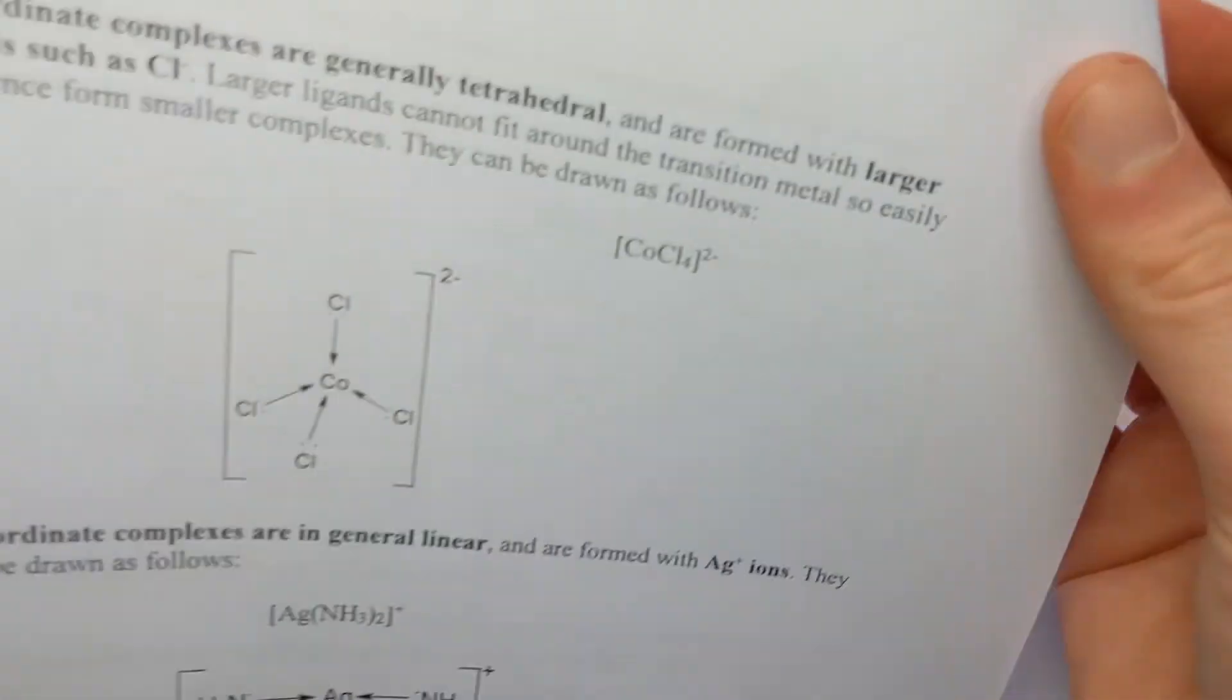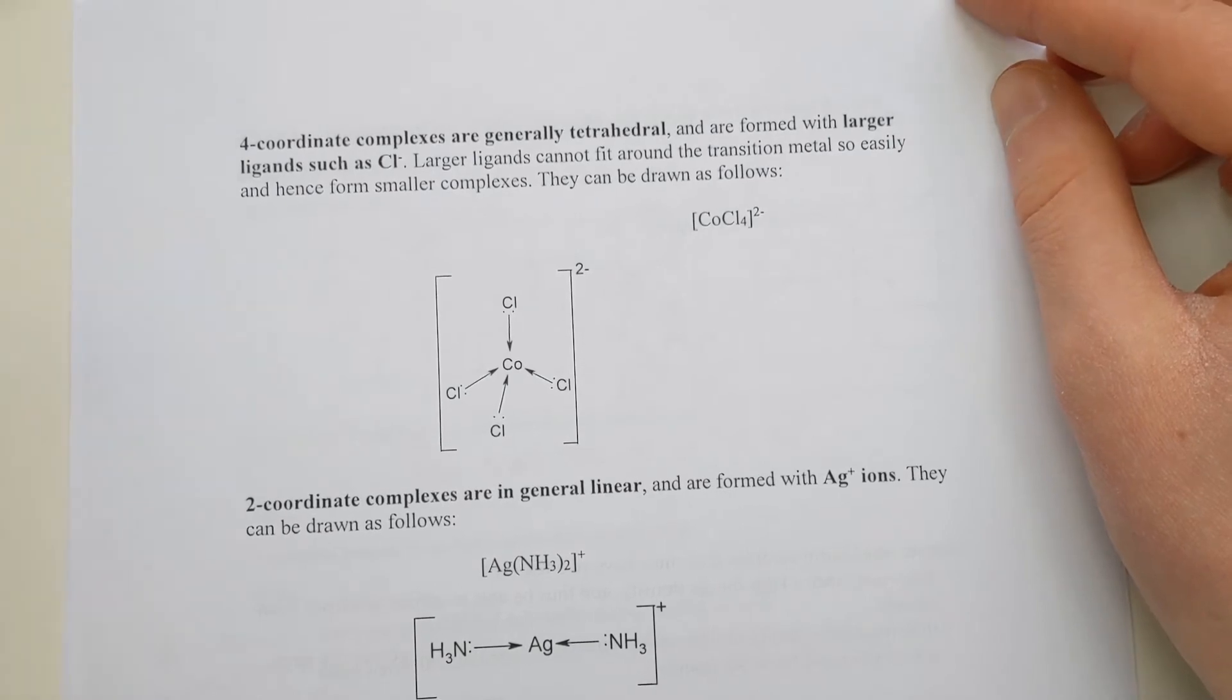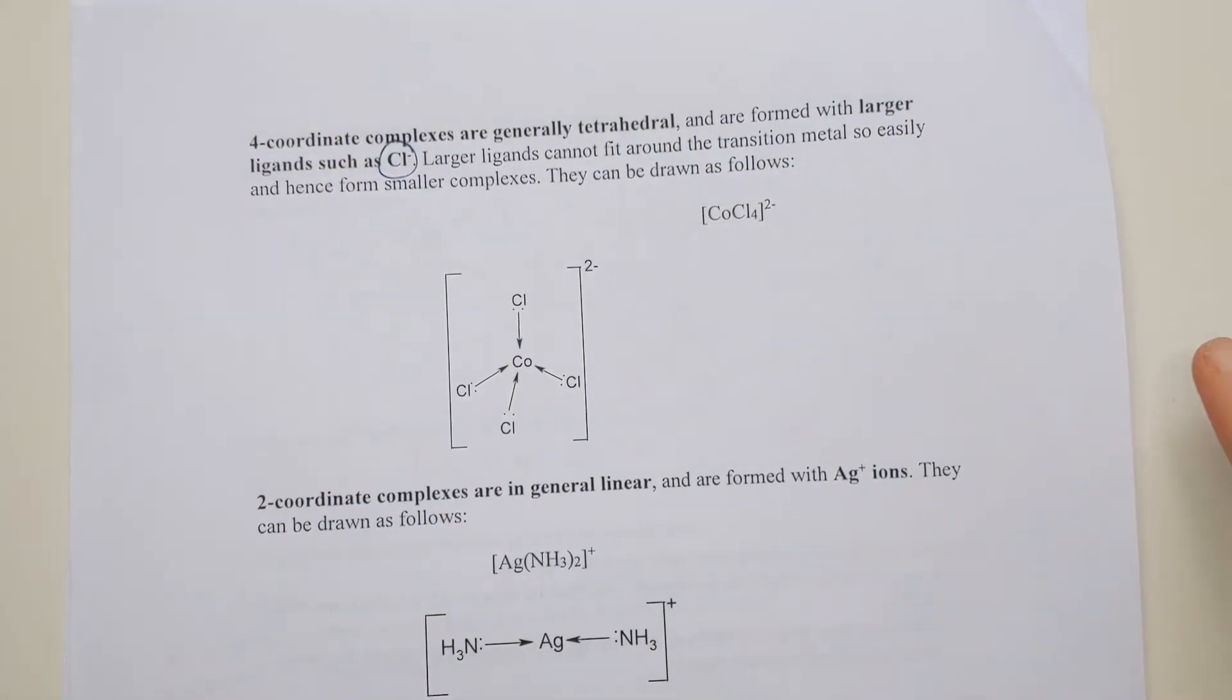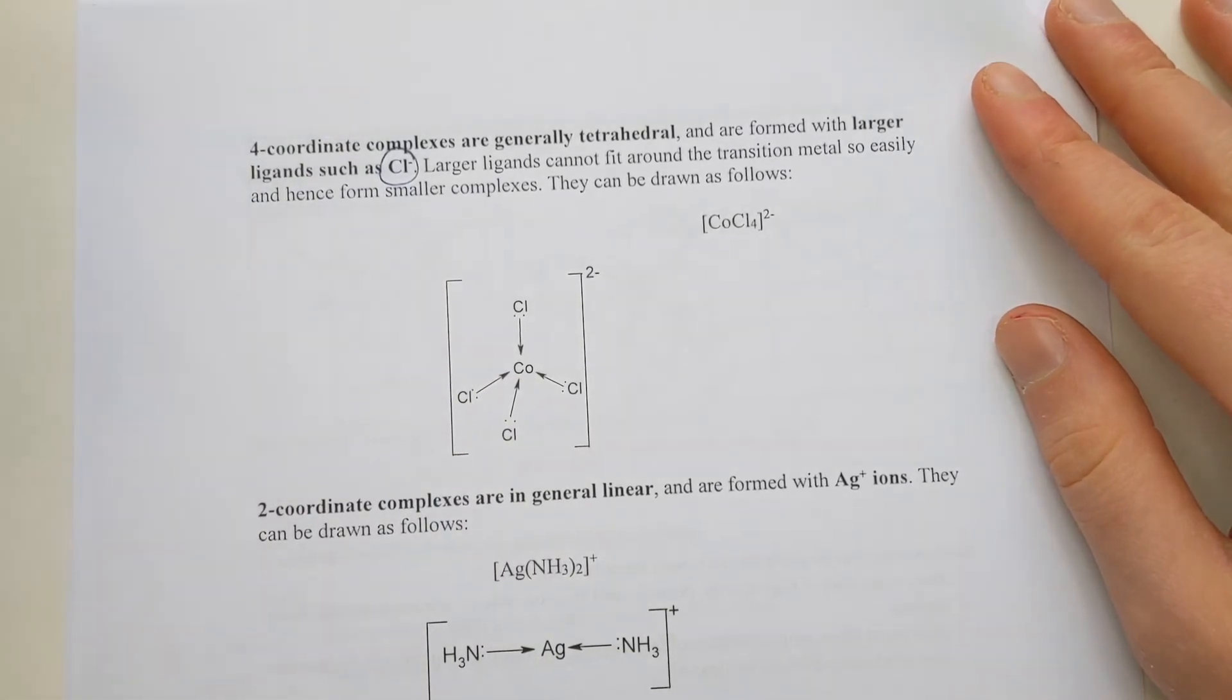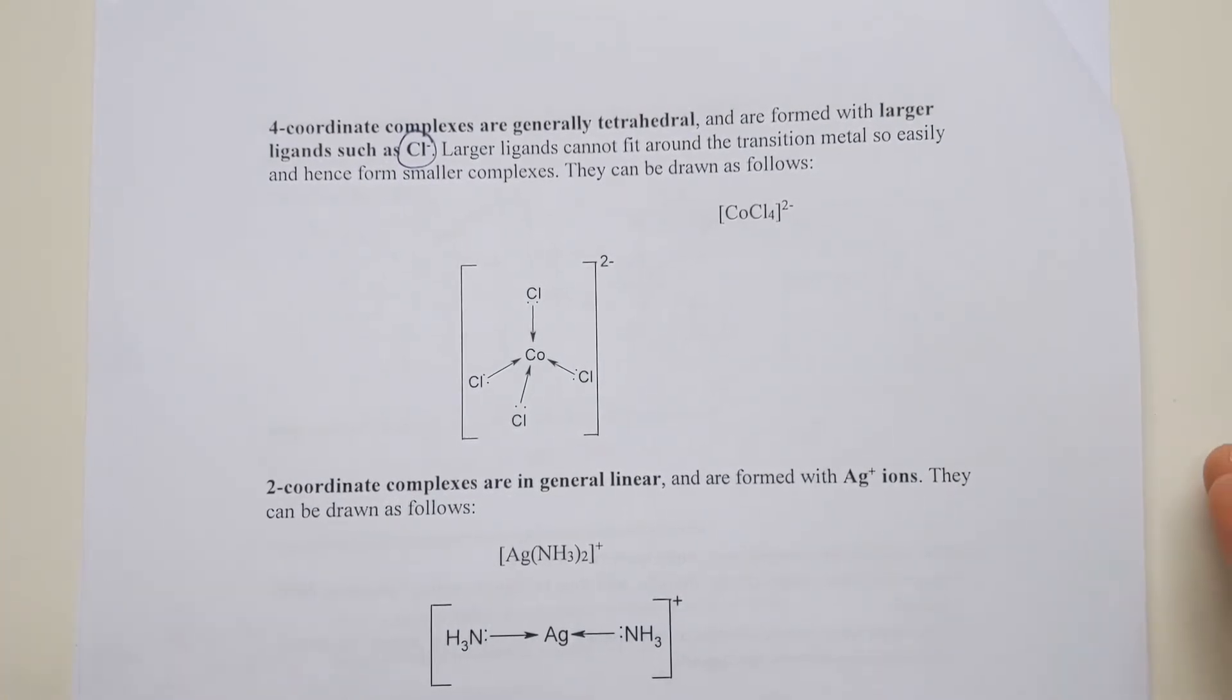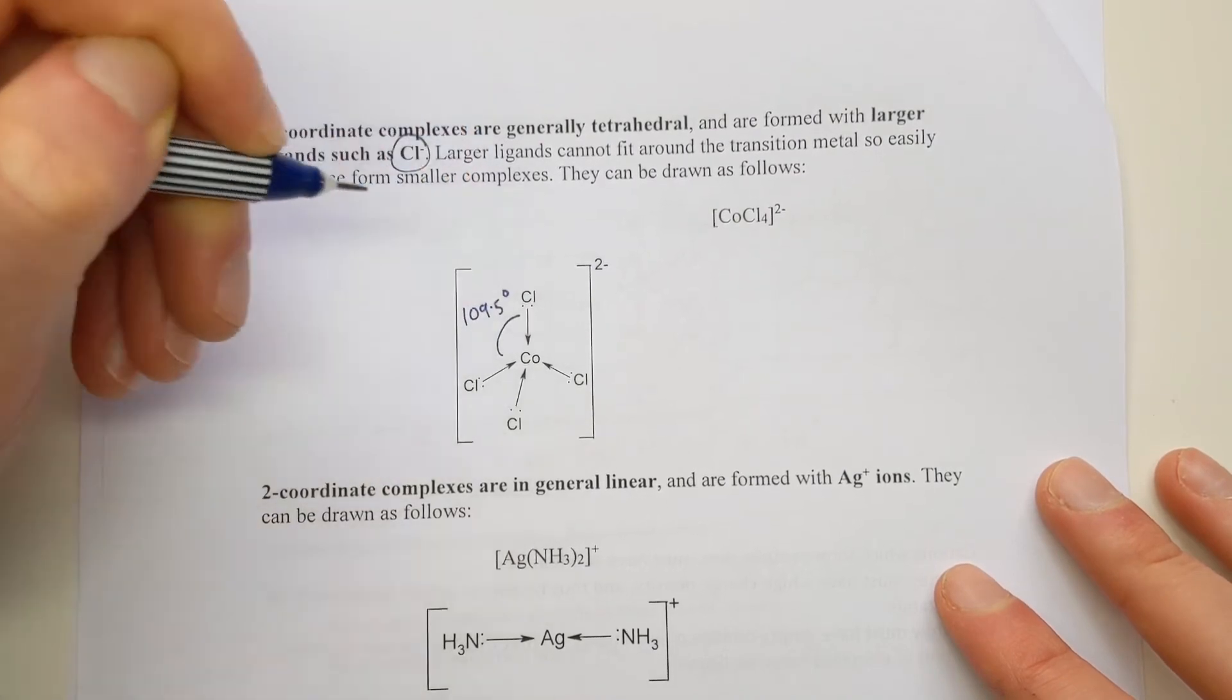In some cases, you might not be able to fit quite as many around if you've got slightly larger ligands. You might not get six coordinate bonds, you might only get four. Four coordinate complexes are generally tetrahedral and form with larger ligands like chloride. Chloride is from the third period of the periodic table and is actually quite a large ion. So we can't fit six around our central atom, we can only fit four. And to spread them out as much as possible, we go tetrahedral with a bond angle of 109.5 degrees.